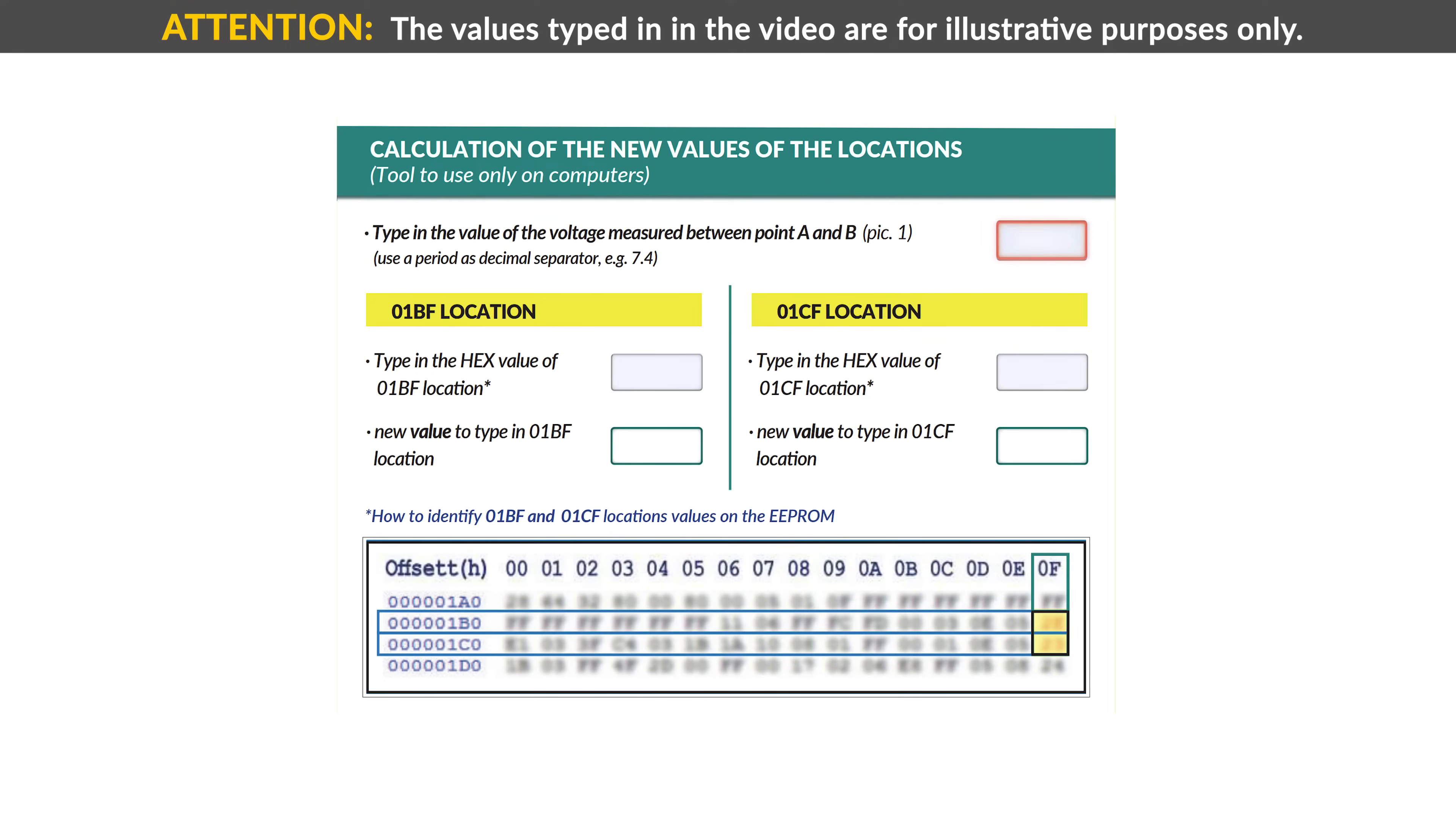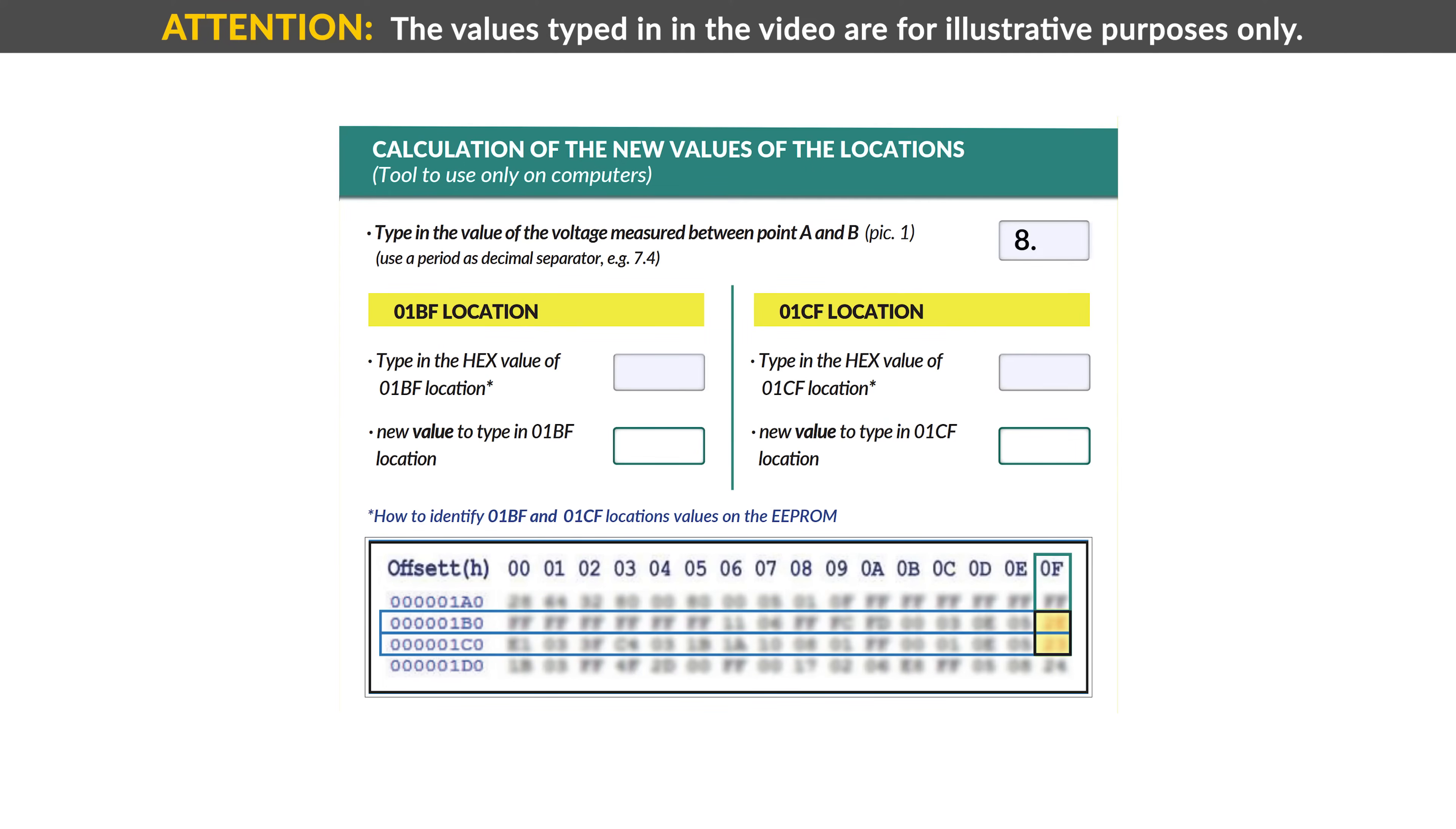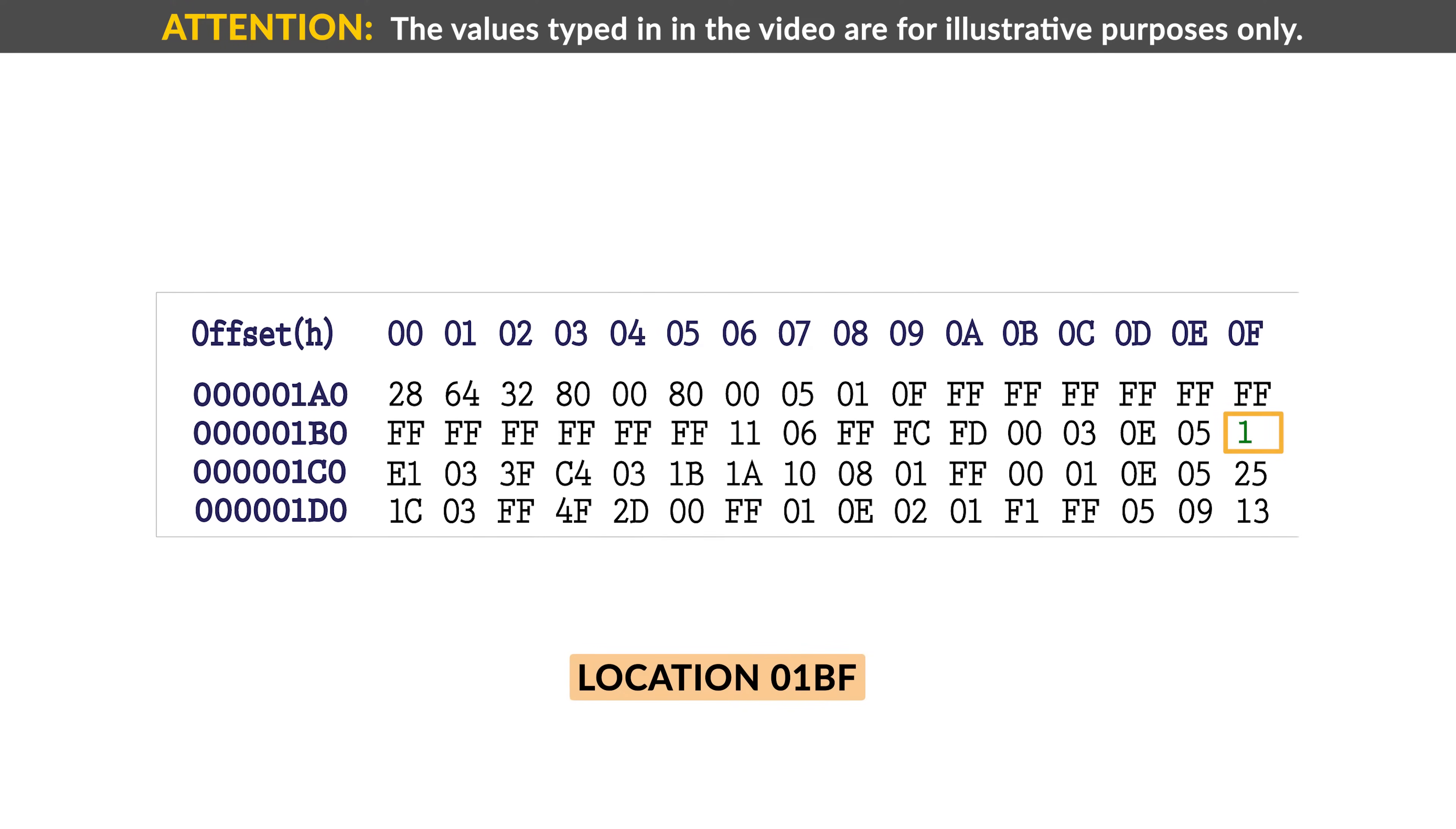Type in the first box on the upper right side the value of the voltage measured before. In this case, the voltage was 8.36V. Then type in its related box the value of the location 01BF, in this case 2B. The tool will automatically calculate the new value, 1C, to insert in the location on the EEPROM.